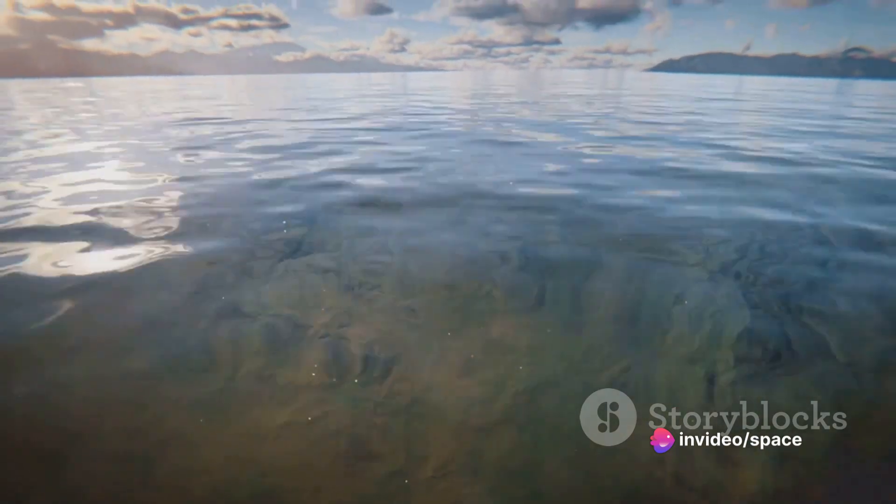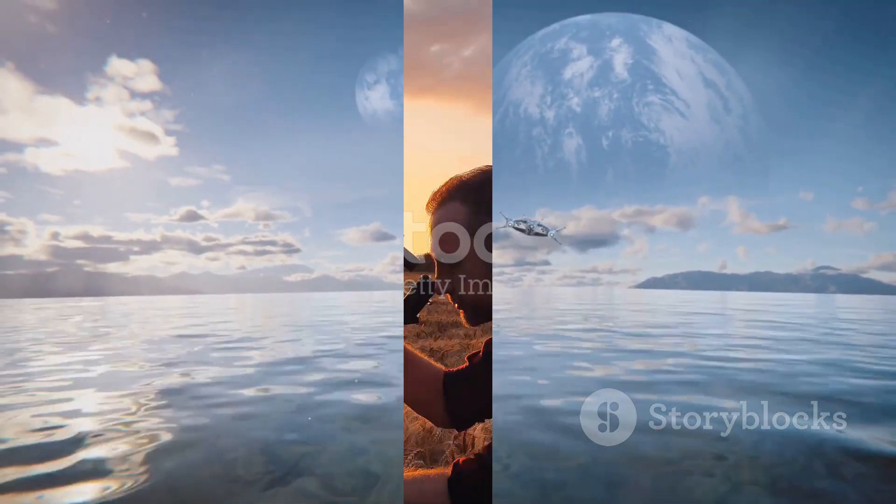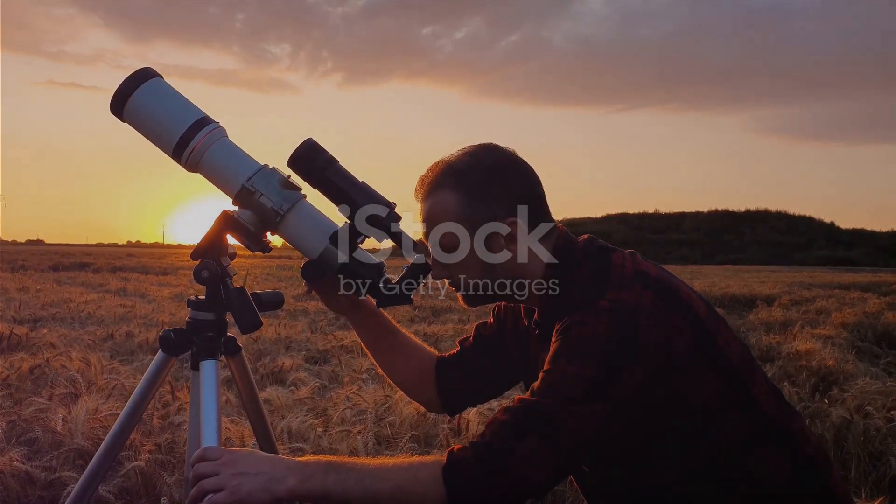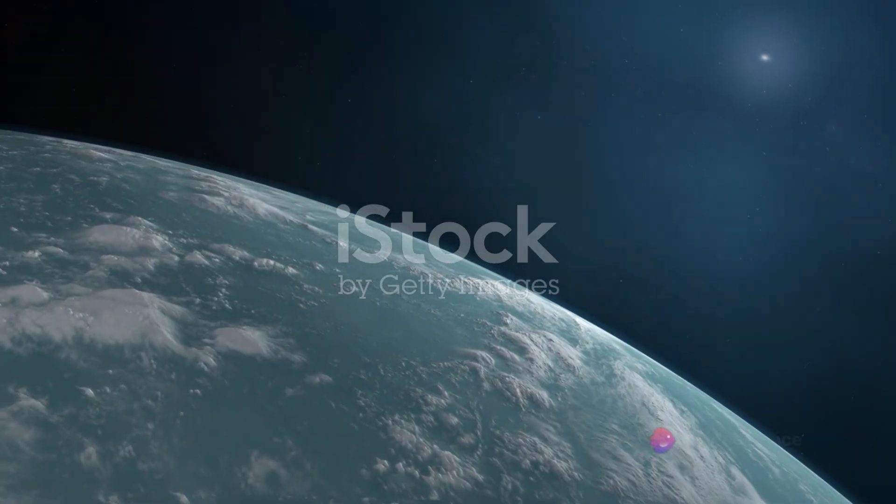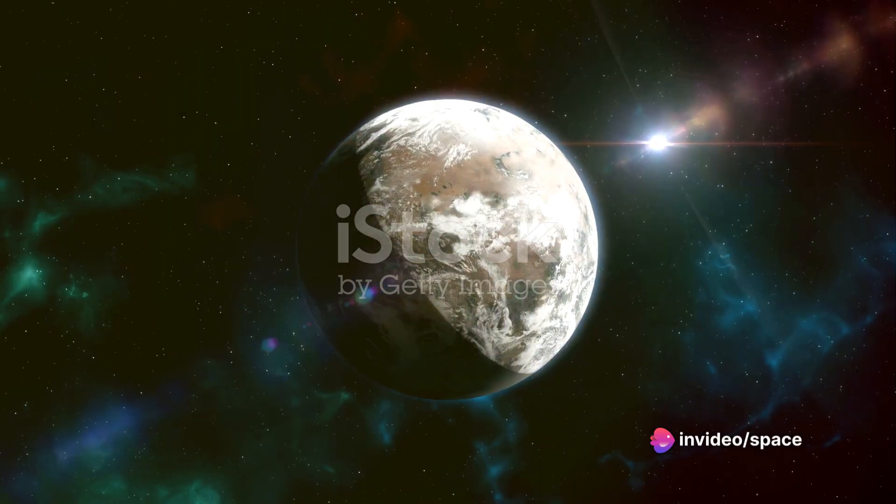Despite being 600 light-years away, Kepler-22b's characteristics make it feel surprisingly familiar. Since its discovery, scientists have been busy trying to learn more about Kepler-22b. The study of this extrasolar planet is a dynamic field, with new insights constantly emerging.